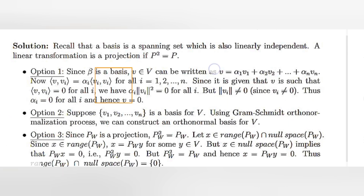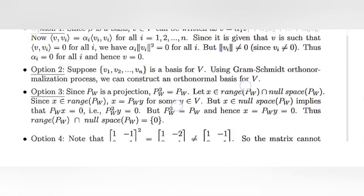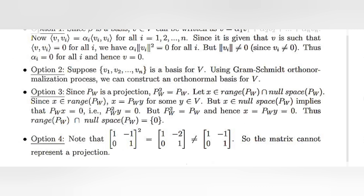For option 2: suppose {v1, ...} is a basis for V. Then using the Gram-Schmidt orthonormalization process, we can construct an orthonormal basis for V. This confirms that there exists an orthonormal basis for R^n with the standard inner product.